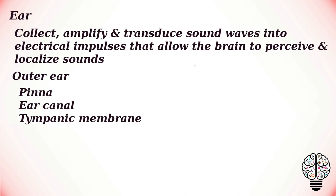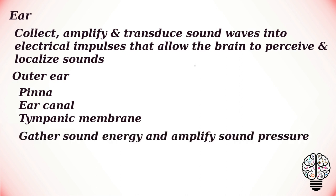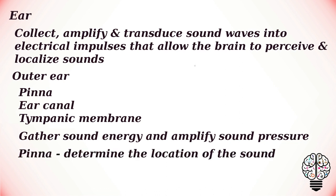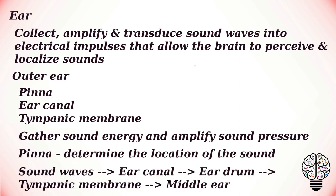The outer ear is the external portion of the ear which can be seen on the outside of the human head. It includes the pinna, the ear canal and the most superficial layer of the eardrum, the tympanic membrane. The outer ear's main task is to gather sound energy and amplify sound pressure. The pinna helps the brain determine the location of the sound. The sound waves enter the ear canal, which amplifies the sound into the eardrum.